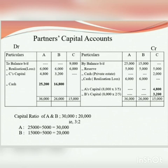As per the Garner versus Murray decision, in search problems the realization loss for the insolvent partner is shared by the solvent partners — that is A and B — in the ratio of their capitals.